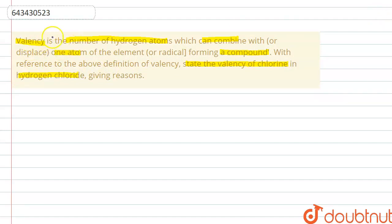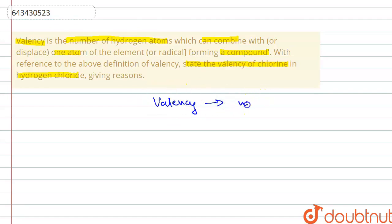In this question, they have given a definition of valency, saying that the number of hydrogen atoms which can combine with one atom of an element to form a compound is the valency. So valency is essentially the number of hydrogen atoms that can combine with another atom.